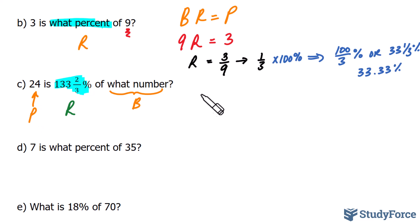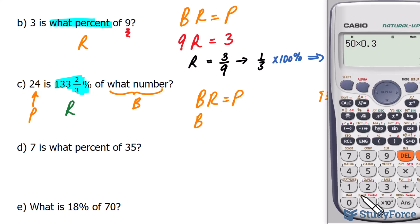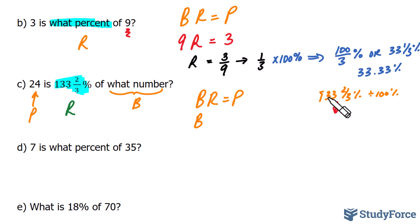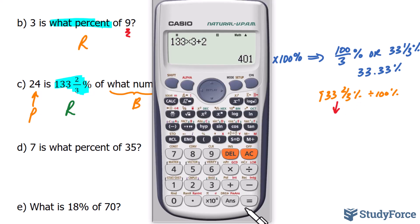So we have B times R equals P, B is unknown this time, and our rate, we can do that conversion now. The 133 and two-thirds percent needs to be divided by 100%. Now if you've watched our previous video, we've shown how to do a problem like this. We first need to change this into improper. 133 times 3 plus 2. In other words, we take that value, multiply it to 133, and then add to it 2. And we end up with 401 over 3.